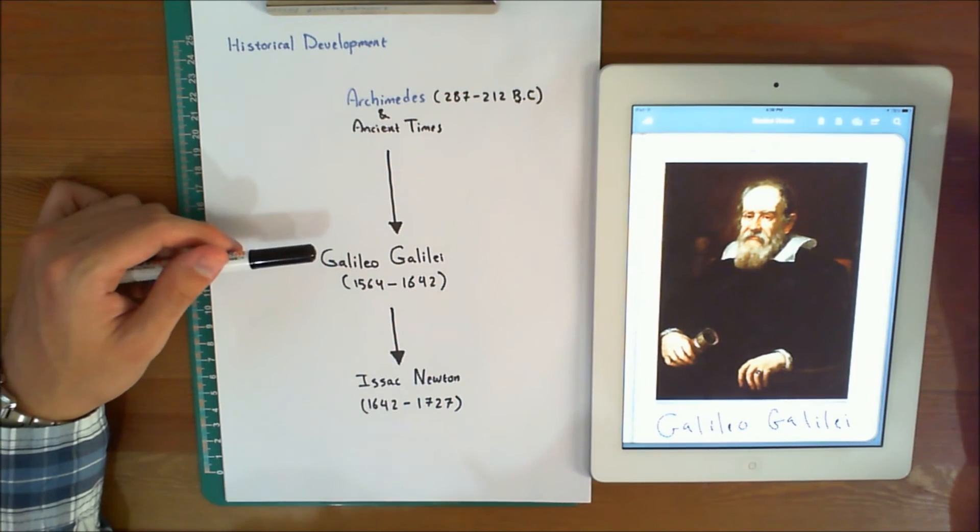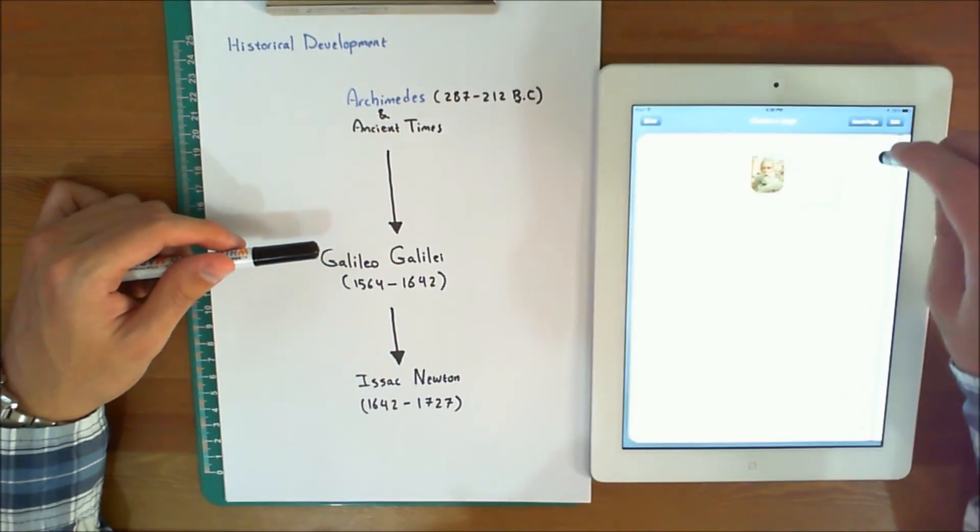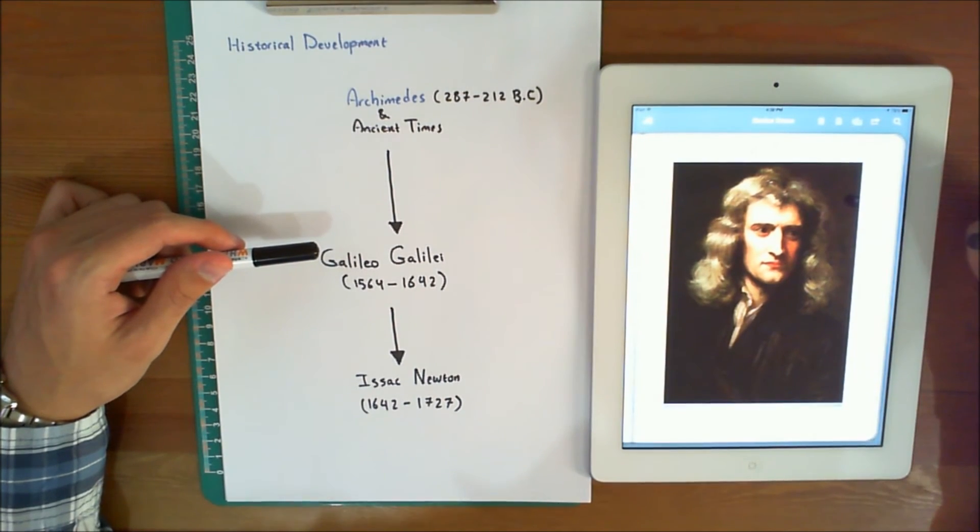The most significant contributions in dynamics, however, were made by Sir Isaac Newton, the famous scientist who postulated the three laws of motion and the law of universal gravitational attraction.